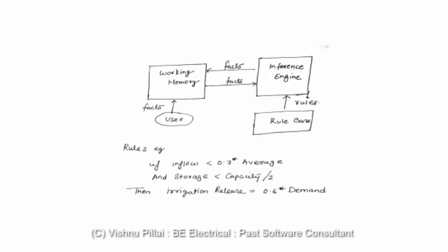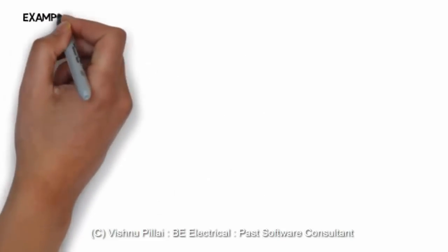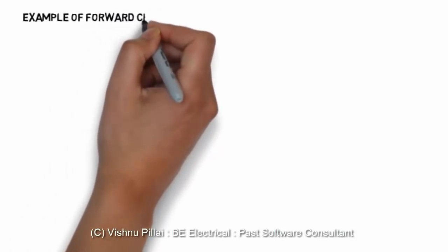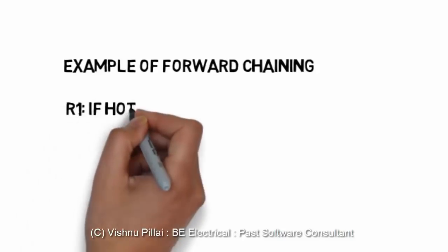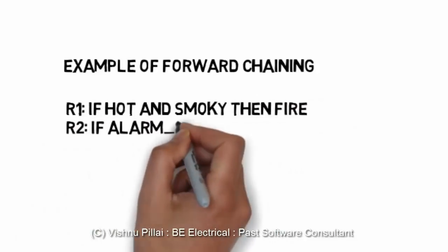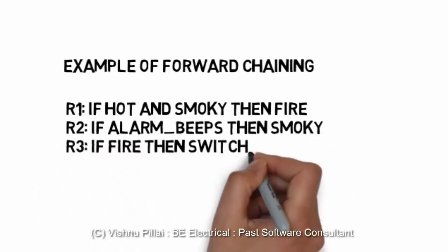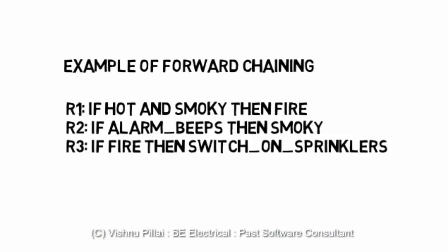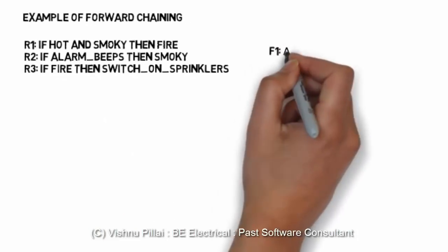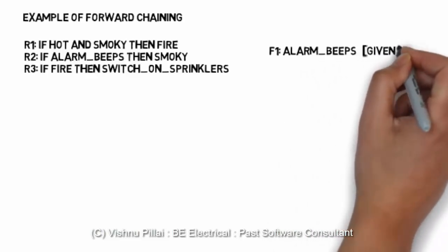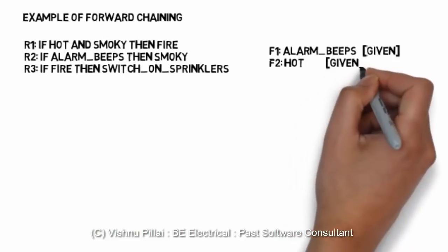The facts flow in the working memory. For example, a rule could be: if the inflow is less than 0.7 average and storage is less than capacity divided by 2, then irrigation release should be 0.6 into demand. This value could be stored as a fact, so next time there is a request for a water release, the remaining demand — say 0.4 into demand — can be derived and released based on previously stored conditions.